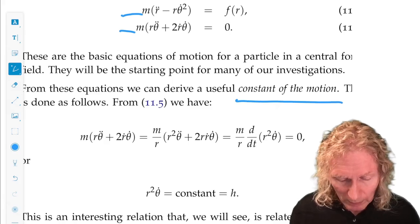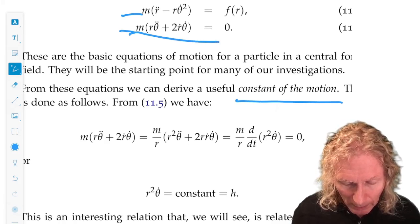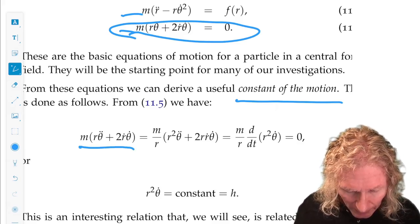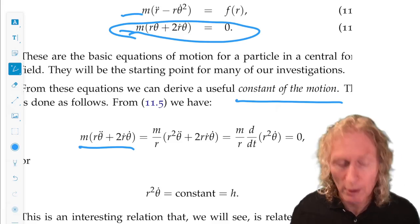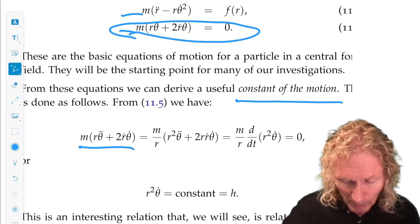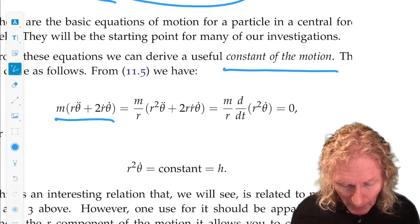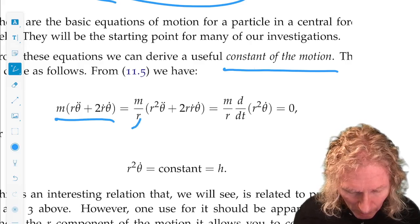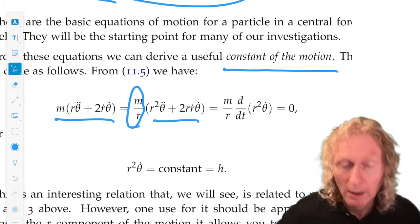So let's look at this equation. And let's multiply it by r over r₁, the famous mathematician's trick. If we multiply it by r over r, we get m over r multiplying this term.